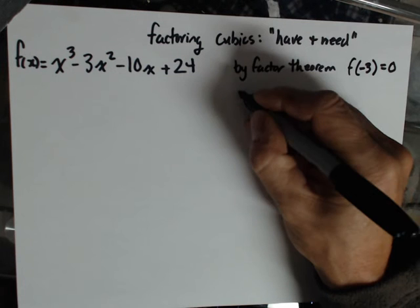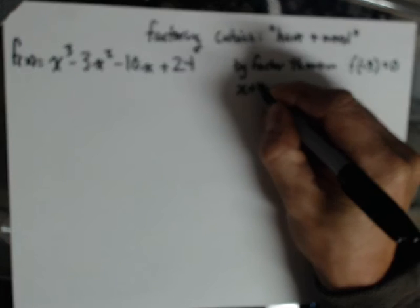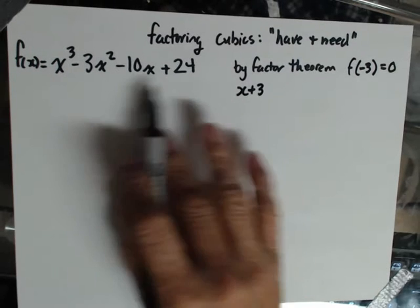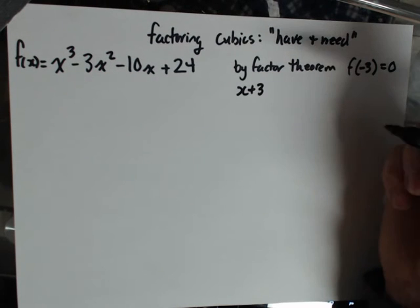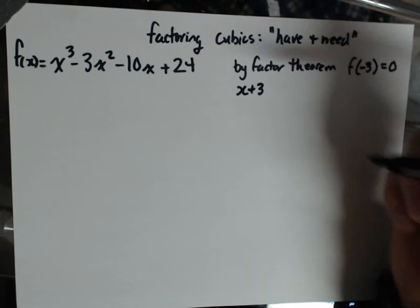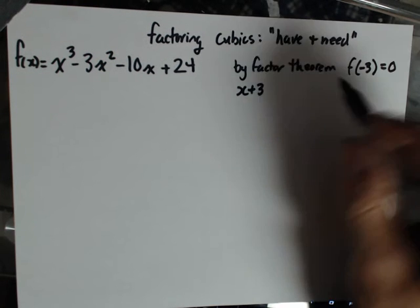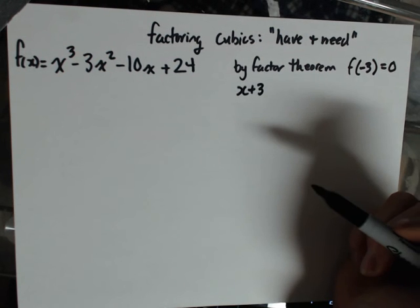And of course that means that the binomial factor x plus 3 will divide into this evenly. What I want to find out is what the quadratic factor is when I know that x plus 3 is the binomial factor.